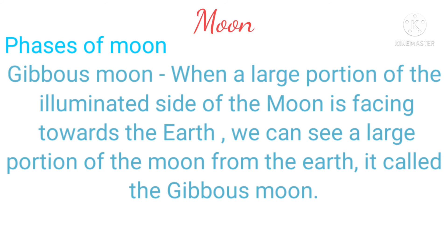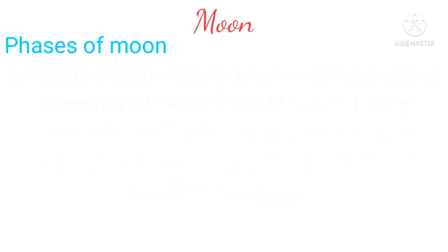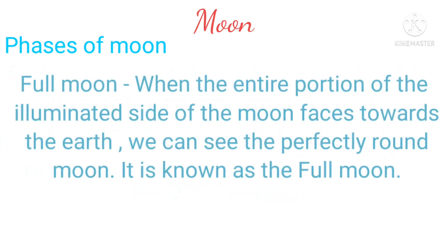Gibbous moon: when a large portion of the illuminated side of the moon is facing towards the earth, we can see a large portion of the moon from the earth. The last phase of the moon is the full moon. When the entire portion of the illuminated side of the moon faces towards the earth, we can see a perfectly round moon. This is known as the full moon.